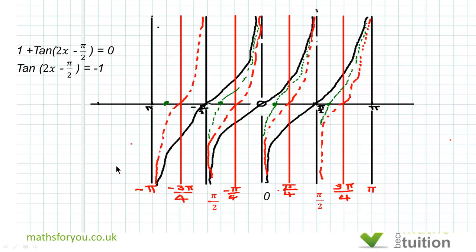If we now take the inverse of tan for -1, or arctan(-1), we have that 2x - π/2 equals -0.785398, which is the same as -π/4. If we now add π/2 to both sides, we end up that 2x equals π/4.